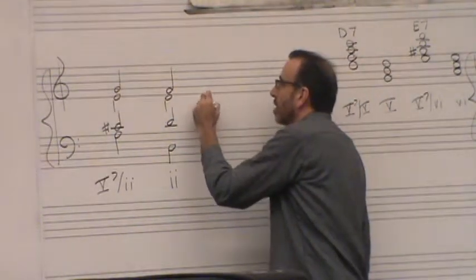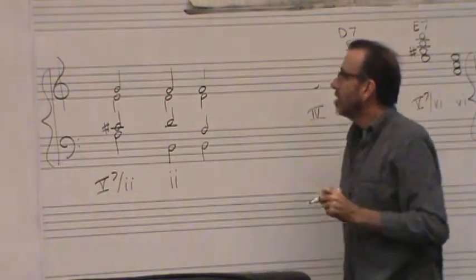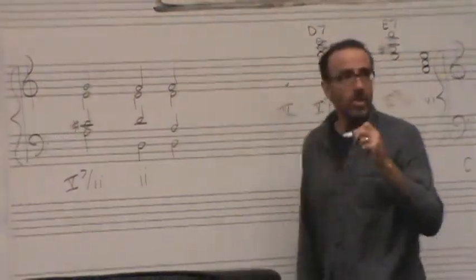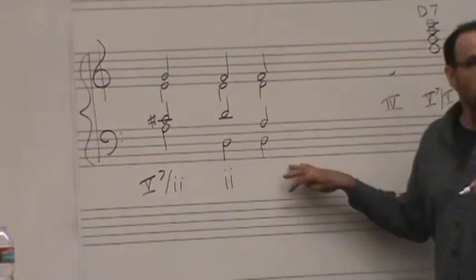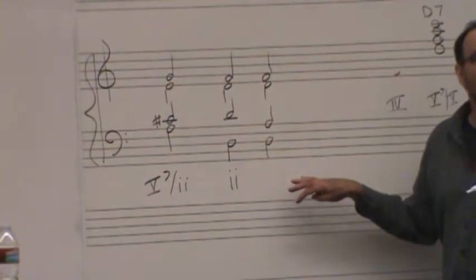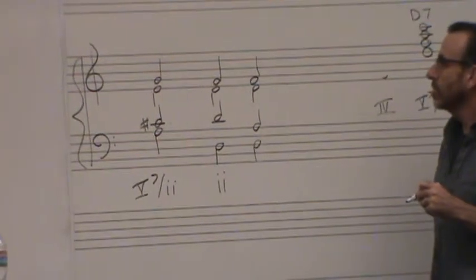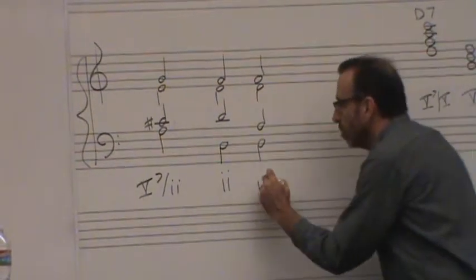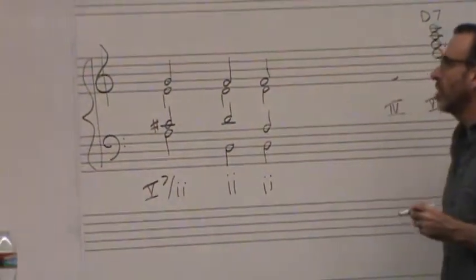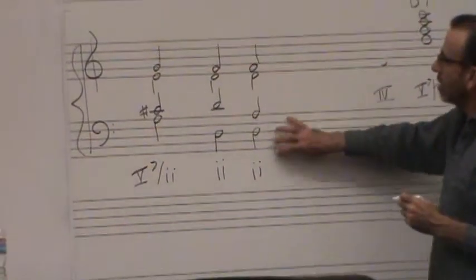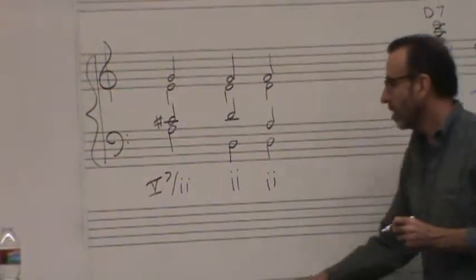So all the rules that apply to the resolution of the dominant 7th chord apply to the resolution of the secondary dominants. So this would be two resolutions of this particular chord. Actually, I kind of like this one better because I'd like to have a 5th in there.